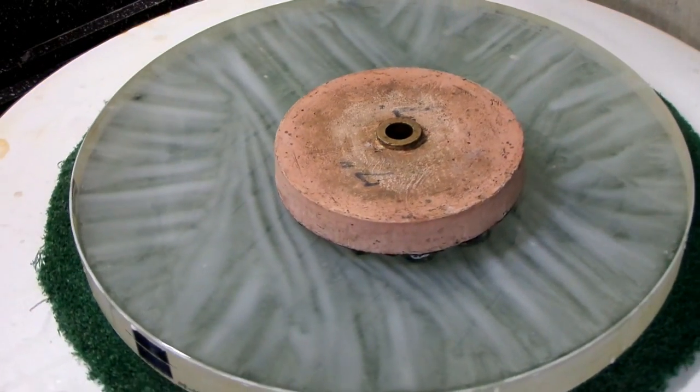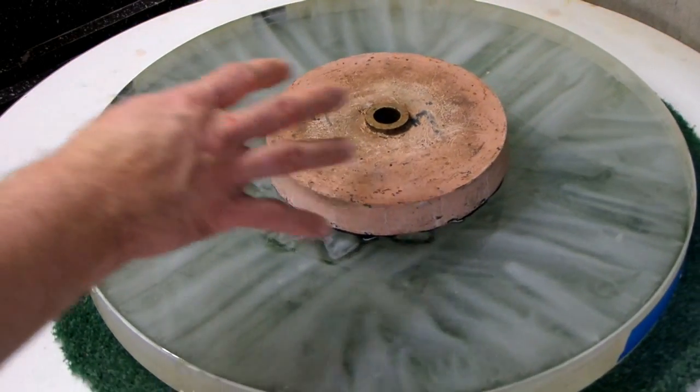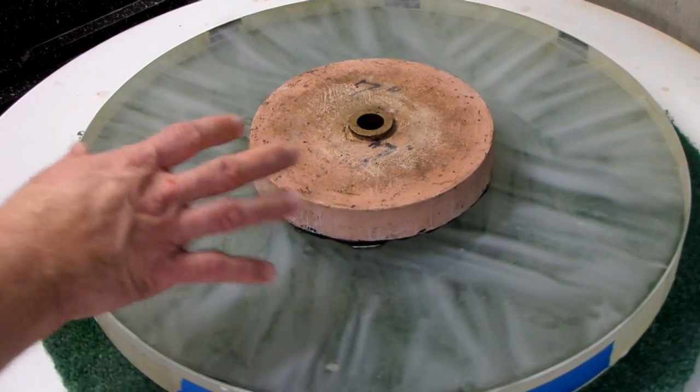So that's how I'll work on this 18 inch F4.4 mirror. We'll see if we can get it from a little worse than one half wave up above that tenth wave category where we want it to be as a premium telescope mirror.